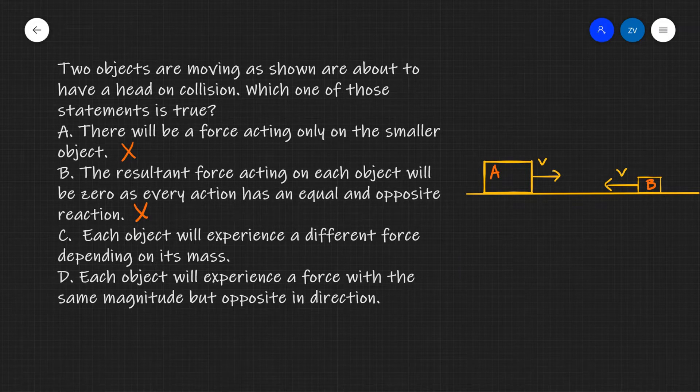So that means that object A is going to experience a force f like so and this force f is due to object B and object B is going to experience the same force but in the opposite direction like so and this force is going to be due to object A.